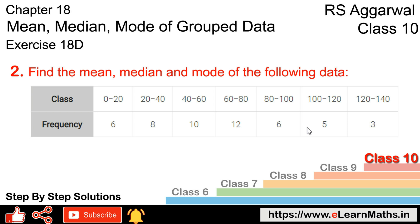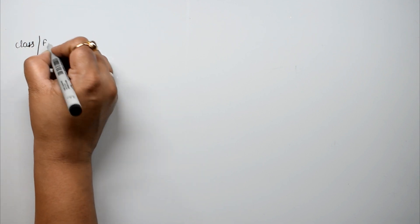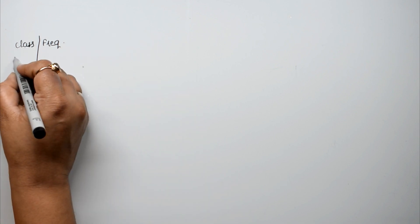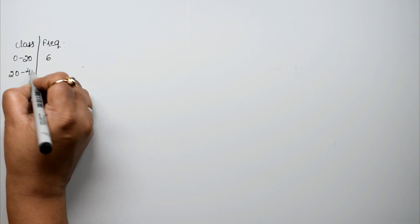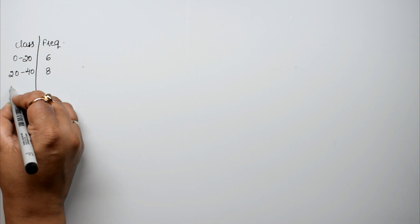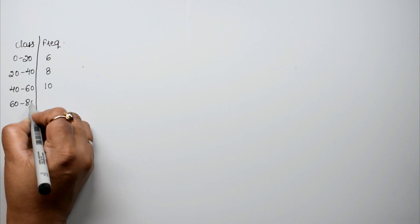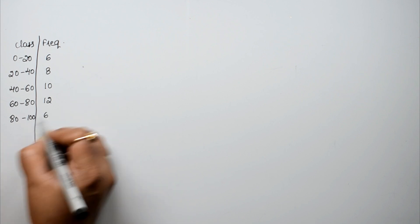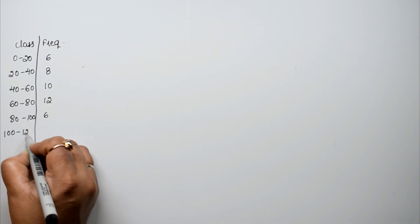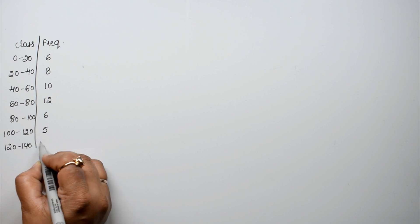We have class and frequency. Class is 0 to 20, we have 6 frequency. 20 to 40, we have 8 frequency. 40 to 60, we have 10 frequency. 60 to 80, we have 12 frequency. 80 to 100, we have 6 frequency. 100 to 120, we have 5 frequency. And 120 to 140, we have 3 frequency.